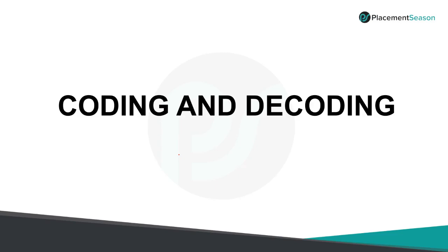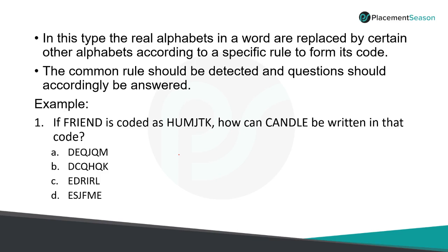Welcome to placement season. This video is about coding and decoding, which is a part of verbal reasoning. It is just like encryption and decryption. In this type, the real alphabets are replaced by some other alphabets in a specific form — it has some logic. When one word is replaced with another word, it has some logic, and based on that they replace. You have to find the common rule and apply it to the next one.